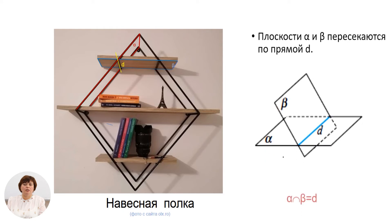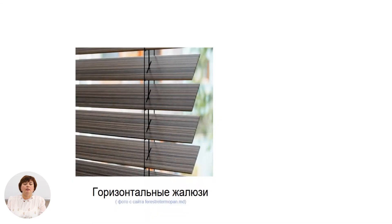Плоскости α и β пересекаются по прямой. Обозначаем мы следующим образом. На картинке вы видите горизонтальные жалюзи. Принцип работы жалюзей – это параллельные плоскости, которые в зависимости от позиции пропускают дозированный свет. В нашем случае это полуоткрытые плоскости жалюзи, поэтому они пропускают свет, тем самым наши плоскости не имеют общих точек.